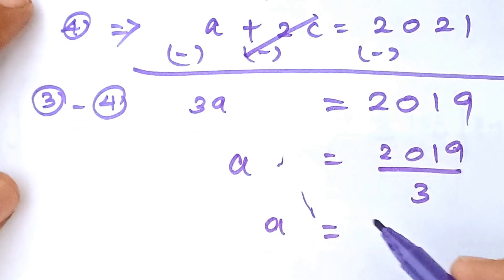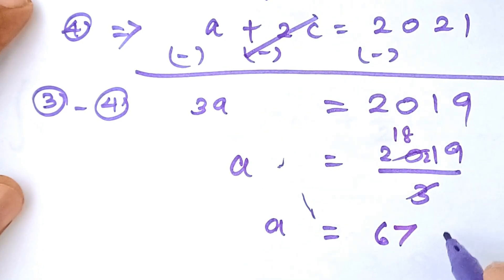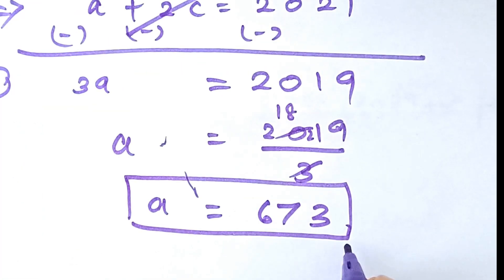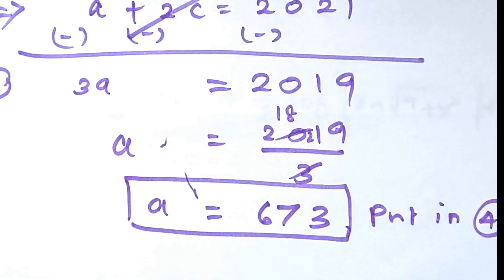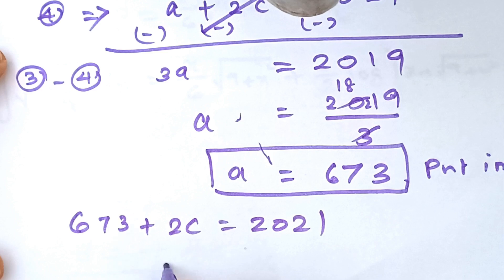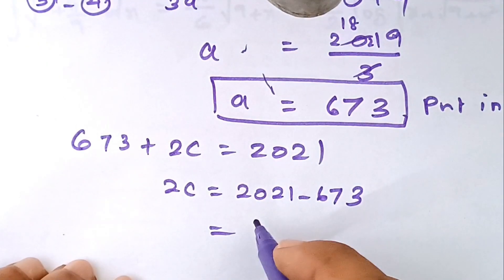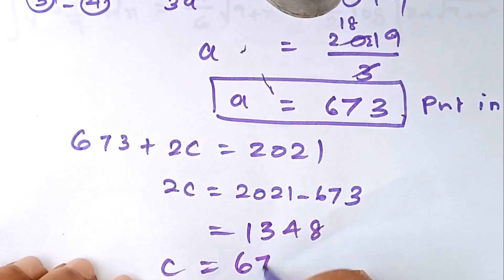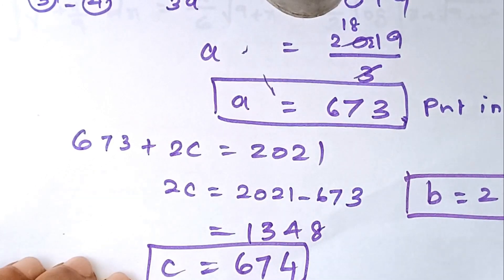Dividing 2019 by 3: 3 into 18 is 6, remainder 21, 3 into 21 is 7, 3 into 9 is 3 — so A equals 673. We already found B equals 2. Substituting into equation 4: 673 plus 2C equals 2021, so 2C equals 2021 minus 673, which equals 1348, therefore C equals 674. For Case 2: A equals 673, B equals 2, C equals 674. Thank you, hope you understood.